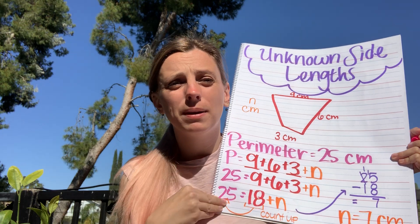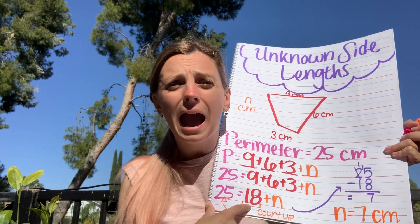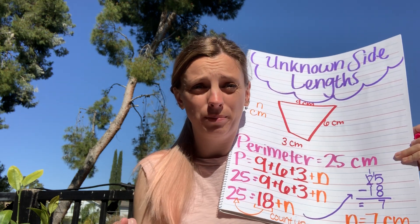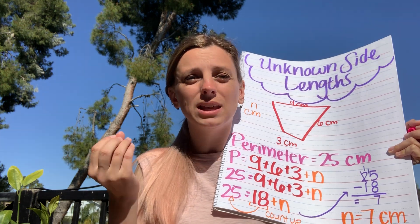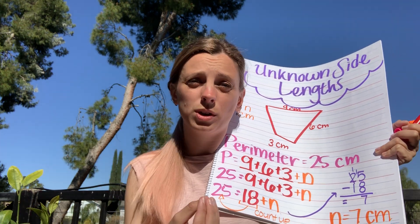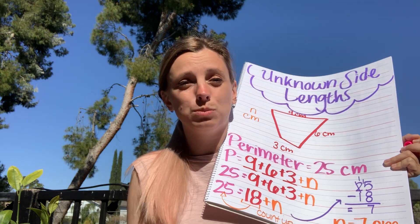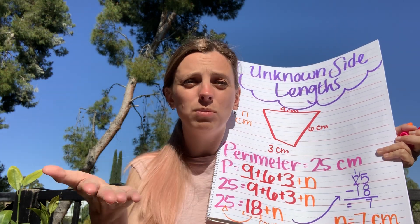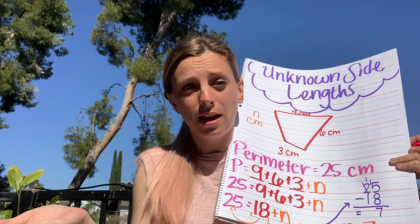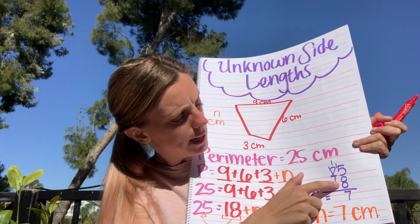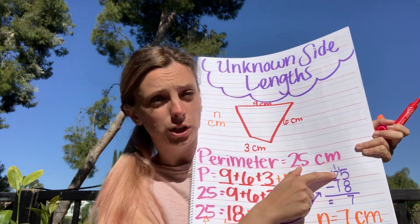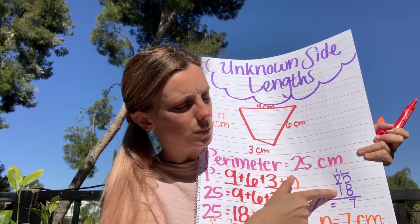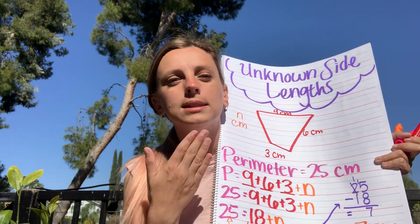Another way to solve this is by using subtraction. When I ask how many more I need to get from 18 to 25, I'm solving a 'how many more' problem. Just like 'each' tells us multiplication or division, 'how many more' tells us to subtract. So I take 25 and subtract 18. I need to borrow, turning the 5 into a 15 — 15 minus 8 is 7, and 1 minus 1 is nothing. The answer is again 7 centimeters.